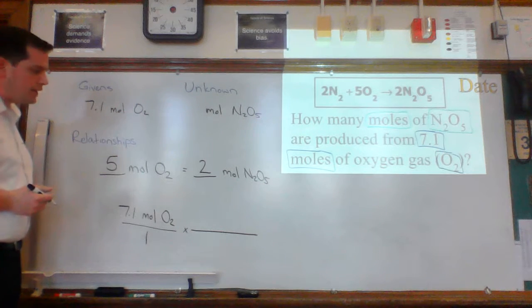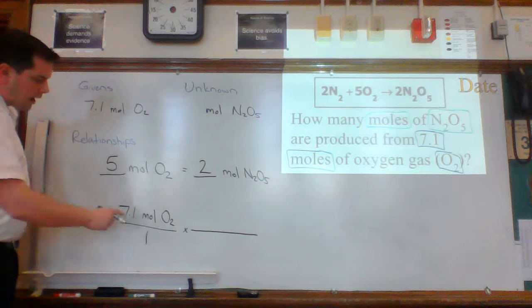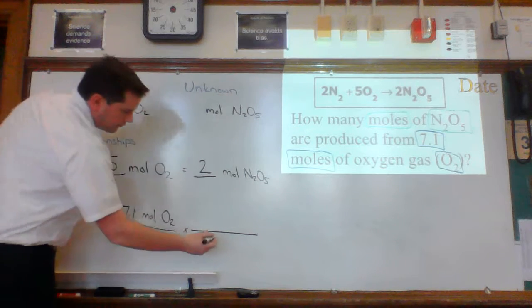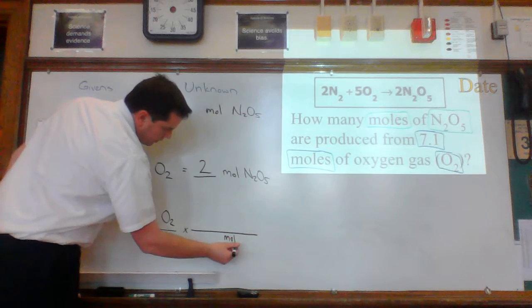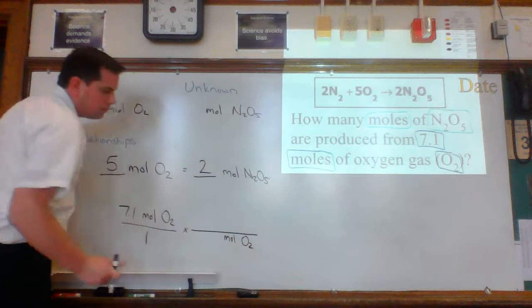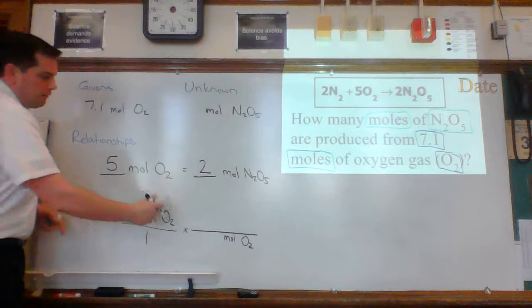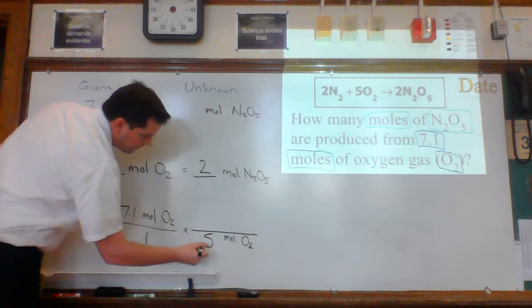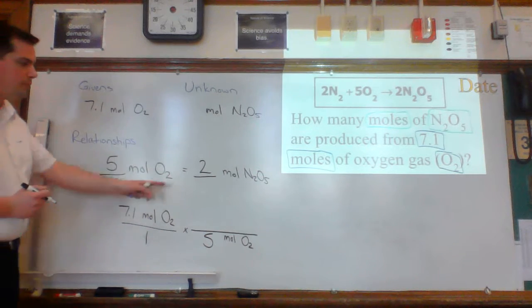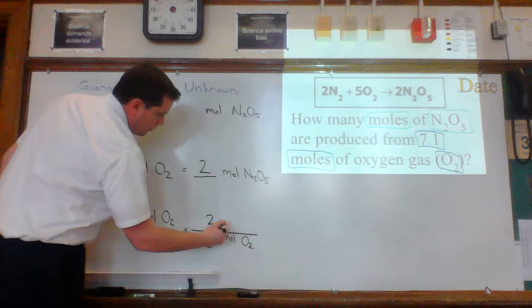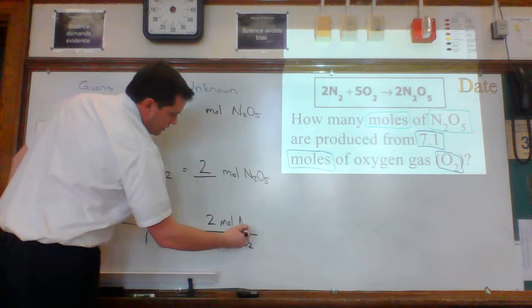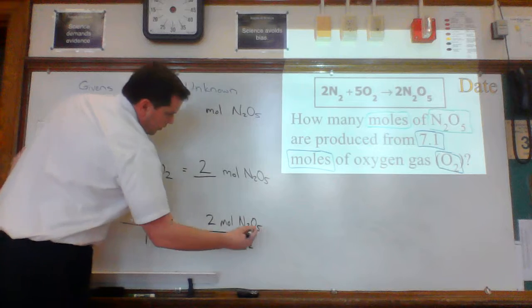Before I try to figure out what goes on the top and what goes on the bottom, I'm going to take the unit and the chemical from the numerator and I'm going to write moles O2 in the denominator of the next fraction. Now I know that 5 goes on the bottom. That must mean that 2 moles N2O5 goes on the top.